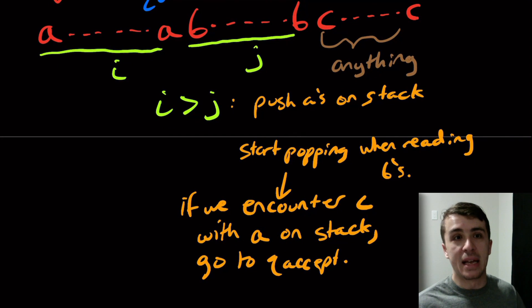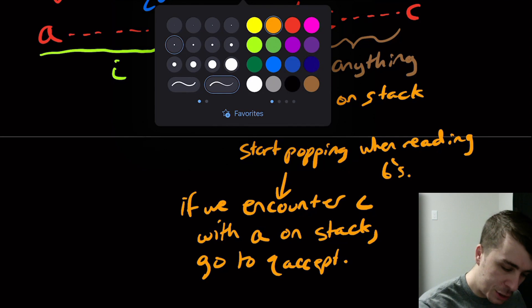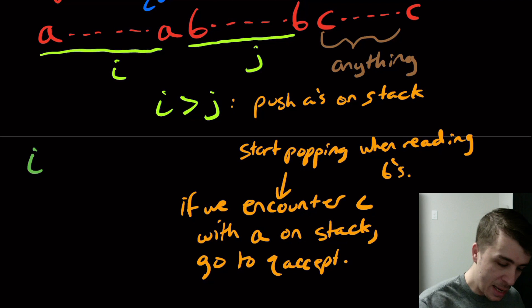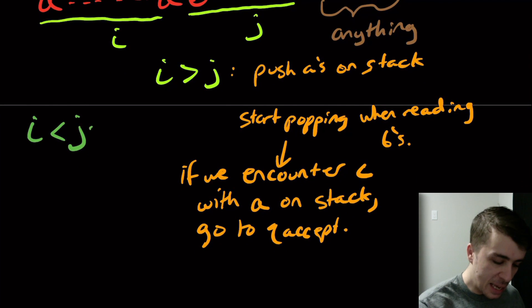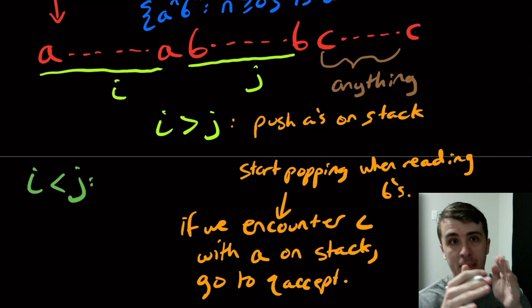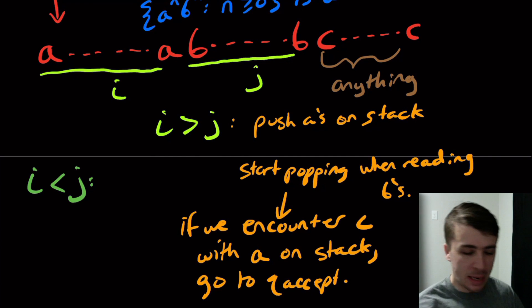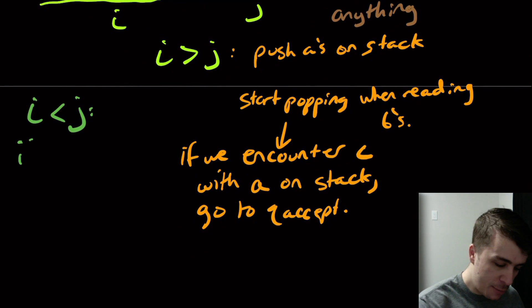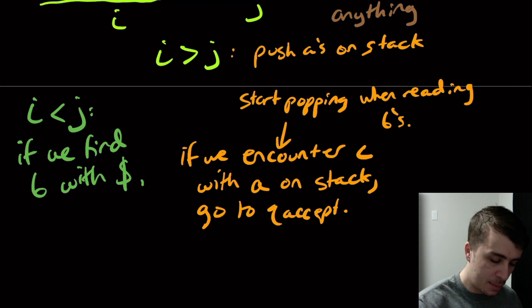Okay, because that would say that the number of A's is bigger than the number of B's. Now let's suppose that we have where I is less than J. So if this is the case, then we will match them up in tandem until we see we still have B's left in the string because there's more B's than A's in this case. Then if that's the case, so we're encountering B on the input, and we still have, there's nothing on the stack other than that special symbol that we put at the beginning, the dollar sign. So here, if we find a B with a dollar sign on the stack, then go to Q accept.